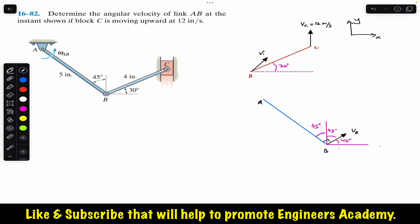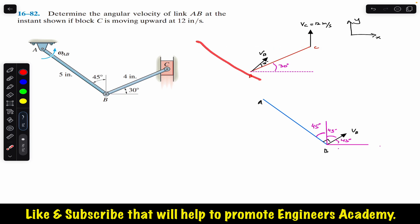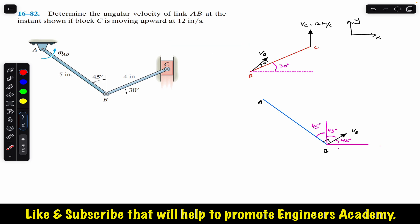To find the instantaneous center, we draw two lines: one perpendicular to V_C and one perpendicular to V_B. The line perpendicular to V_C is horizontal. The line perpendicular to V_B is drawn accordingly. These two lines, perpendicular to V_B and V_C respectively, intersect at a point — that intersection is our instantaneous center of zero velocity.